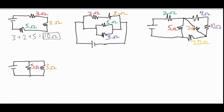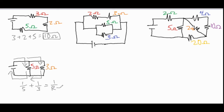Moving on to the next one — now we have a parallel circuit where the electrons have multiple paths to loop around and get from high potential to low potential. When you have a parallel circuit, you want to add up the inverses of each of the resistors and set that equal to the inverse of the total resistance. To solve for R_T, you can take two different routes.